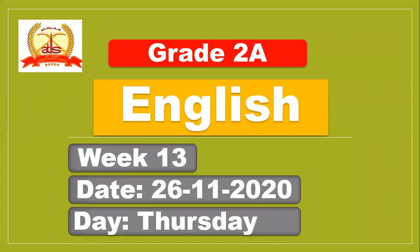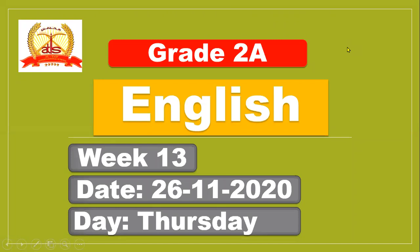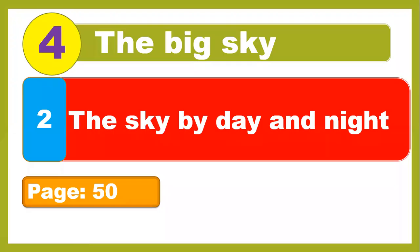Hello my dear students, I hope you are doing well. I'm your teacher Bilal Ahmed, and this is today's summary of English class, week number 30 — sorry, week 13. Today was Thursday, 26 November 2020. We started Unit number four: The Big Sky, and this is lesson number two: The Sky by Day and Night.